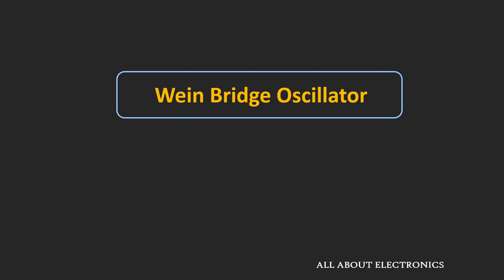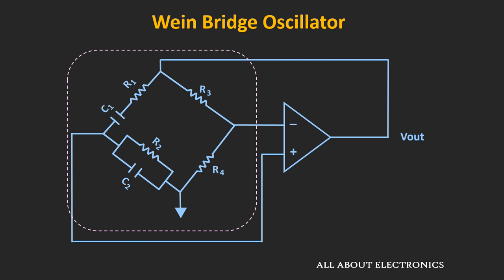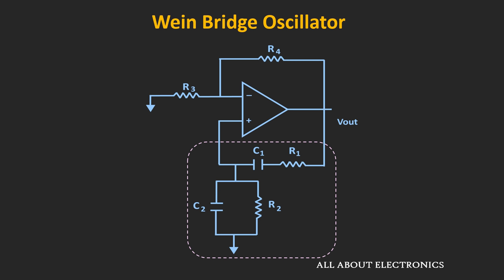This Wien Bridge Oscillator is a harmonic oscillator, meaning that the output of the oscillator is a sinusoidal signal. It is used for the generation of a sine wave, typically in the range of audio frequency. If you see the circuit of the RC oscillator, it involves a bridge circuit. Now, this resistor R3 and R4 are part of the amplifier, and these two branches of the bridge circuit form the RC feedback network.